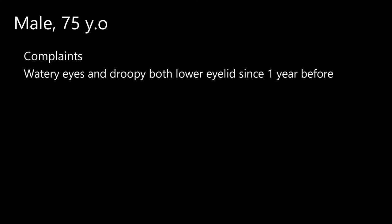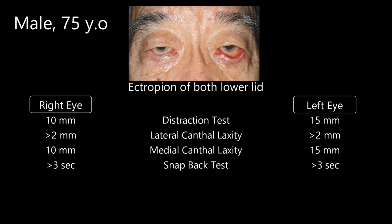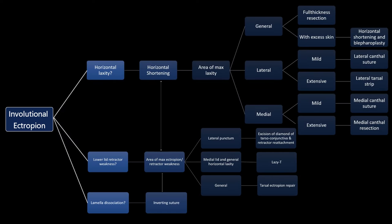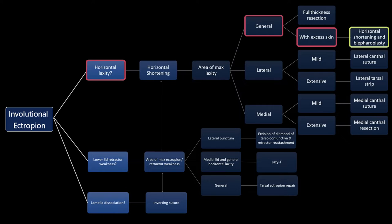This was a case of a 75-year-old male with complaints of watery eyes and droopy lower eyelids. There was marked outward rotation of the lower eyelid margin in both eyes, and the patient had generalized lower eyelid laxity. Other ocular examination was within normal limits. According to the algorithm, generalized eyelid laxity with marked skin excess makes this a good candidate for the Kuhnt-Szymanowski procedure.